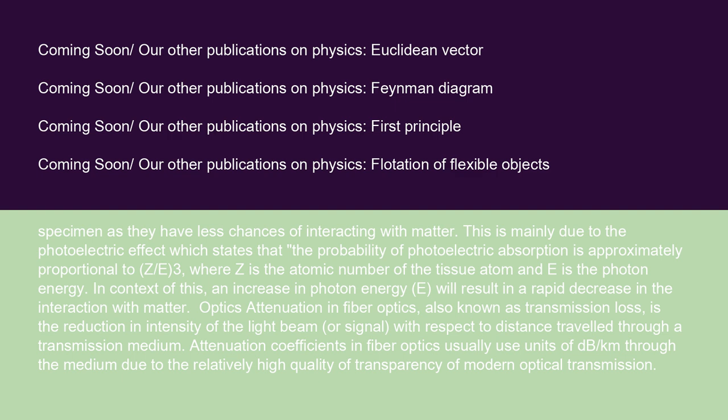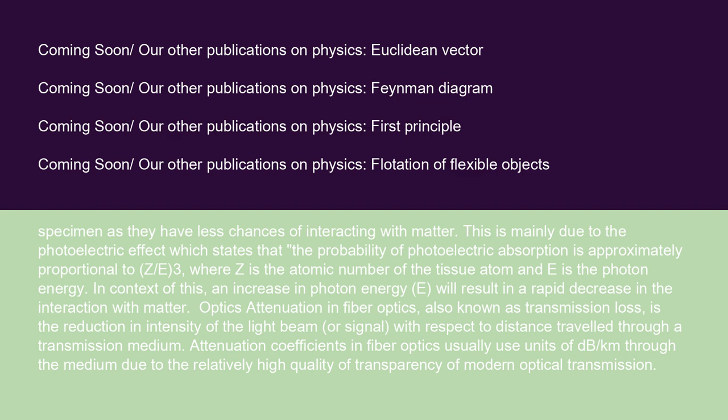Attenuation in fiber optics, also known as transmission loss, is a reduction in intensity of the light beam or signal with respect to distance traveled through a transmission medium. Attenuation coefficients in fiber optics usually use units of dB/km due to the relatively high transparency of modern optical transmission. The medium is typically a fiber of silica glass that confines the incident light beam to the inside. Attenuation is an important factor limiting the transmission of a digital signal across large distances; thus, much research has gone into limiting attenuation and maximizing amplification of the optical signal. Empirically, attenuation in optical fiber is caused primarily by both scattering and absorption. It can be quantified as: Attenuation (dB) = 10 × log10(Input Intensity / Output Intensity).